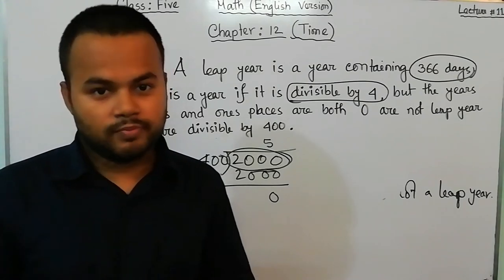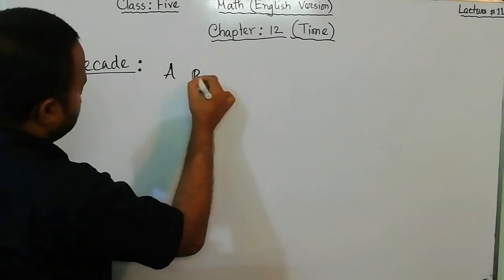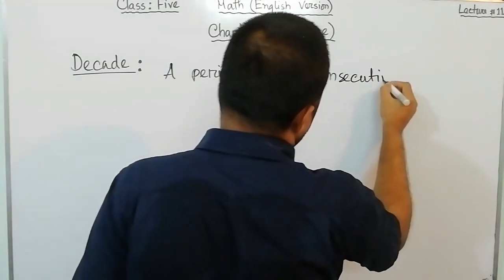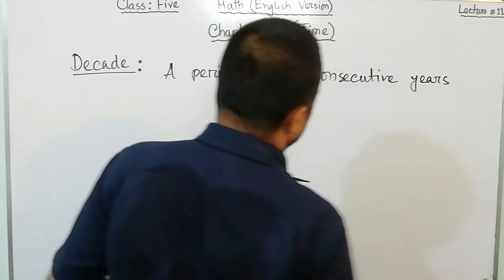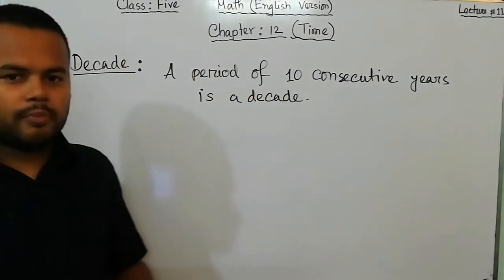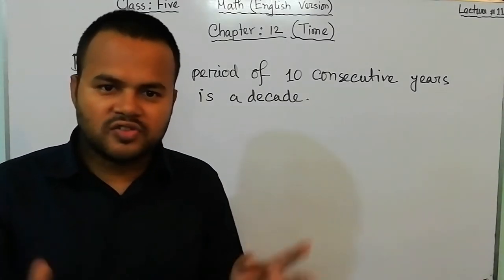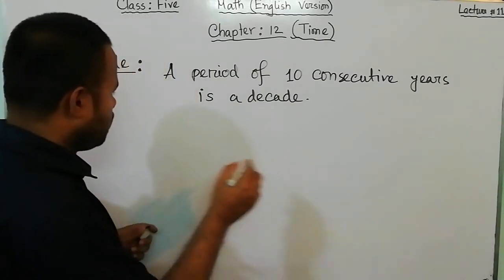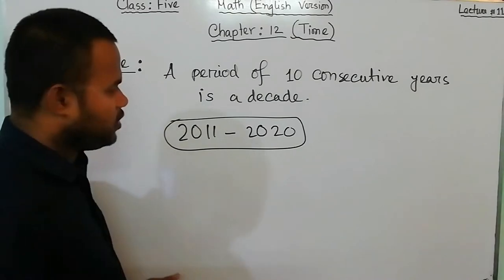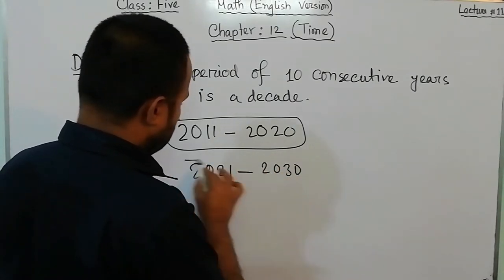Now we will learn about decade. A decade is a period of 10 consecutive years. For example, from 2011 to 2020 is one decade, and from 2021 to 2030 is another decade.